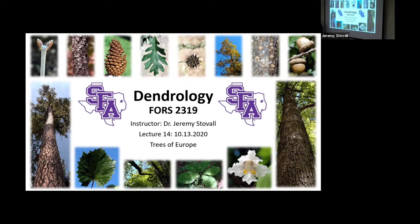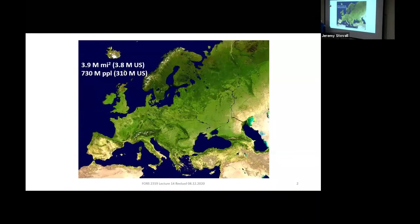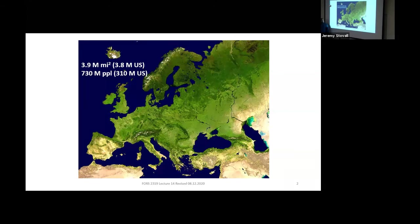Today we'll be covering Trees of Europe, then wrap up our Trees of the World unit on Thursday covering Trees of Asia. Looking at Europe, it's about the same land area as the United States — 3.9 versus 3.8 million square miles — but it has more than twice as many people. That very high population density has more than anything impacted the forests we're going to see in Europe.